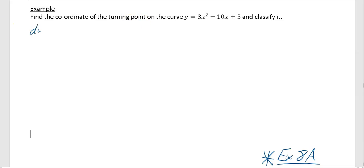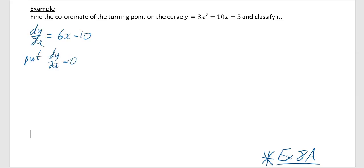First, find dy/dx: differentiating y = 3x² − 10x + 5 gives dy/dx = 6x − 10. Then set dy/dx equal to zero: 0 = 6x − 10, rearranging gives 10 = 6x, so x = 10/6 = 5/3.